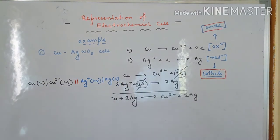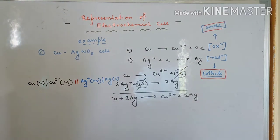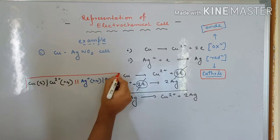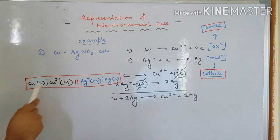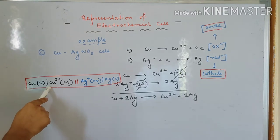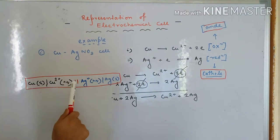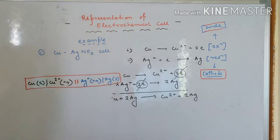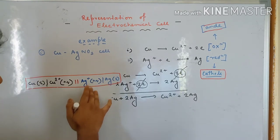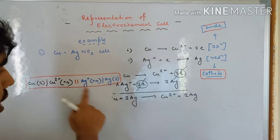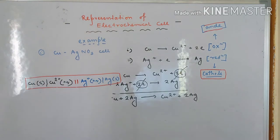This is how the cell should be represented. From this information only, we can understand what is happening. Copper followed by Cu²⁺ means it is anode - oxidation - so copper will lose two electrons giving rise to Cu²⁺. Then salt bridge, followed by Ag⁺ followed by Ag, meaning silver-plus will accept the electron to become metallic silver. Since it is accepting electrons, its reduction makes it cathode. You can get the overall cell reaction from the representation itself - that is the speciality of this notation.